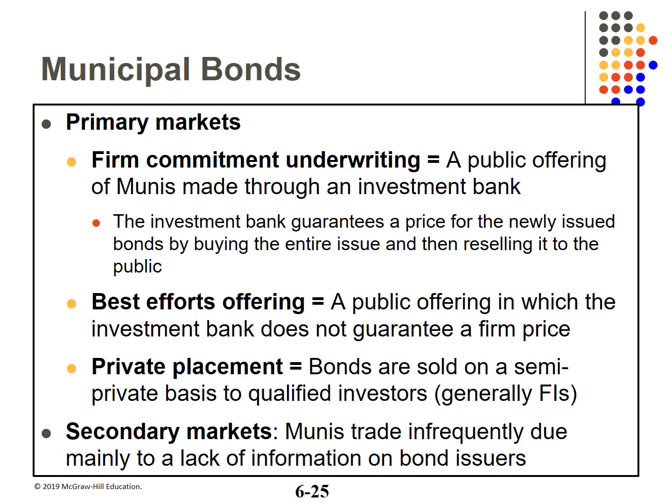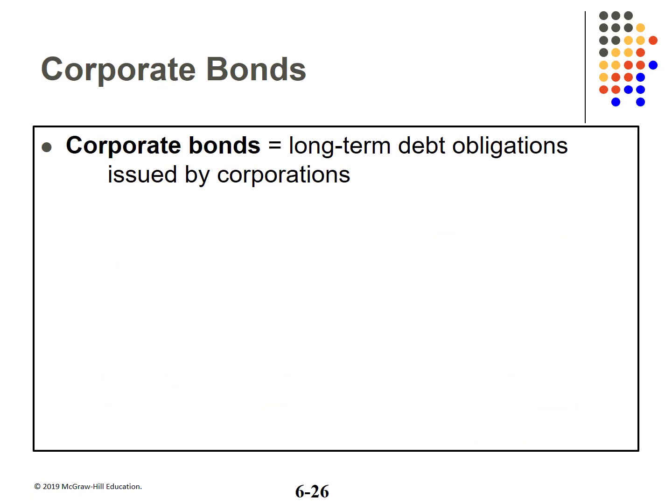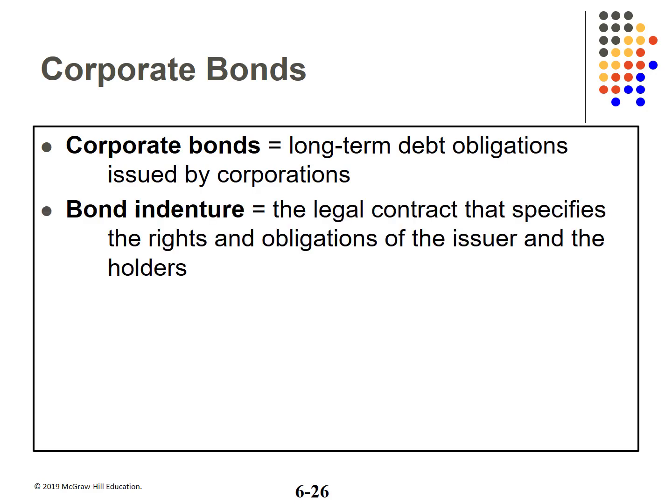Munis trade very infrequently due mainly to the lack of information. Corporate bonds are long-term debt obligations issued by corporations to finance their operations. The bond indenture is the legal document that defines the rights and obligations of buyers and issuers. Bearer bonds are not registered to the buyer — they are no longer legal in the United States but still issued in some countries. Bearer bonds are like cash; whoever has them can cash them in. The IRS didn't like bearer bonds as they could not trace who was getting the interest payments. Registered bonds are book entry registration to the owner.